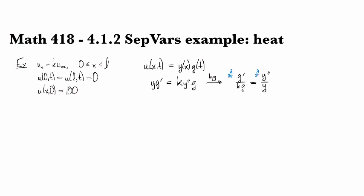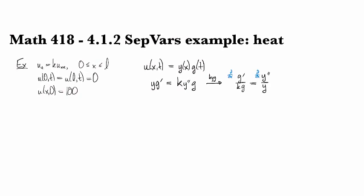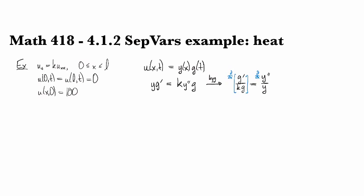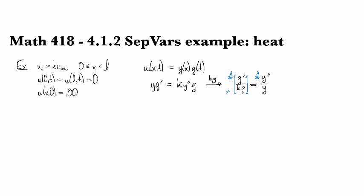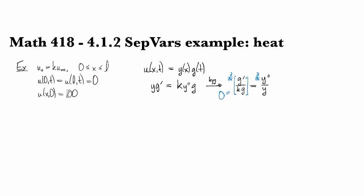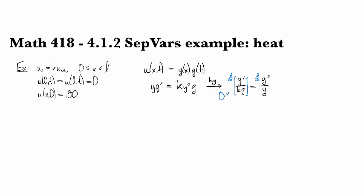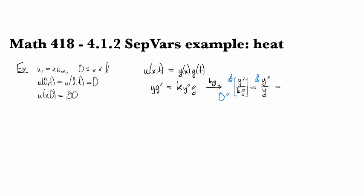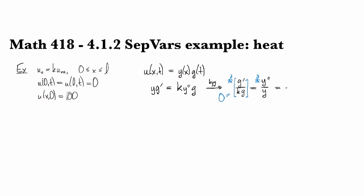And then the observation is that if I do d/dx to both sides, then on the left-hand side, there's no x's over here. So this is a constant. So d/dx to the left-hand side is equal to 0. That means that d/dx of the right-hand side is also equal to 0.